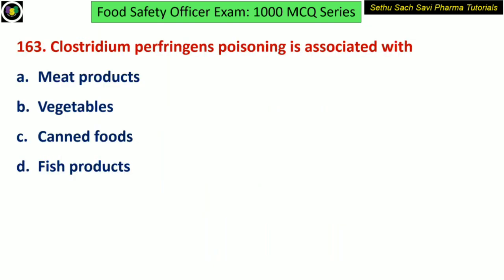Coming to the third question of the day: Clostridium perfringens poisoning is associated with — is it meat products, vegetables, canned food, or fish products? Yes, it is meat products.